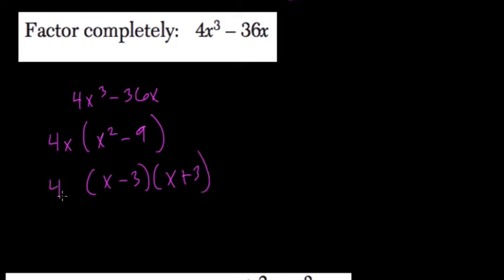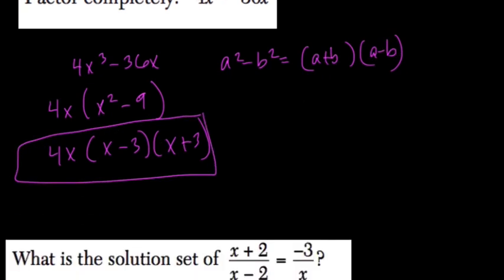Remember the difference of two squares, right? Let's say we have a squared minus b squared. That just equals the square root of both terms added and subtracted. So here we're done. We can't factor anymore any further.